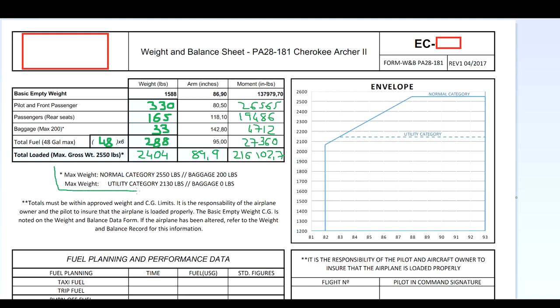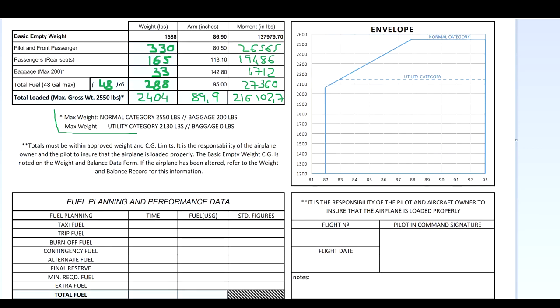The maximum weight for the normal category is 2,550 pounds with up to 200 pounds of baggage allowed. The maximum weight for the utility category is 2,130 pounds with no baggage on board — the utility category is more restrictive. The load sheet notes that totals must be within approved weight and CG limits, and it is the responsibility of the airplane owner and pilot to ensure the airplane is loaded properly.